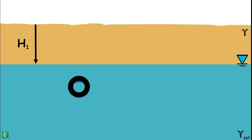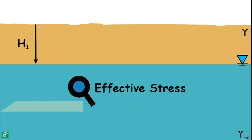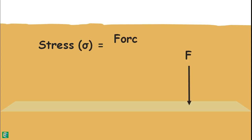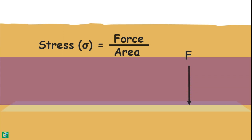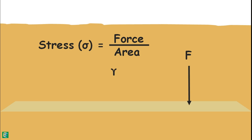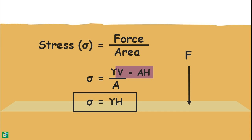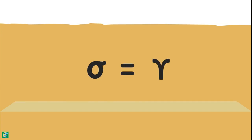We will try to find out the effective stress at a point or plane under the soil. Stress at any point or plane under the soil can be given as the force on that plane divided by the area of that plane. Force on that plane is the weight of soil above the plane, which is the unit weight of soil multiplied by its volume. Volume is area multiplied by the height of the soil mass. Hence, we can directly write this stress under any material as its unit weight multiplied by the height of the material above that point.